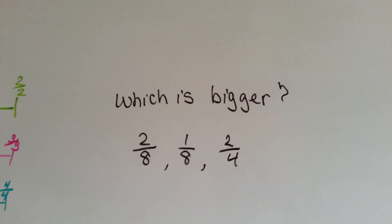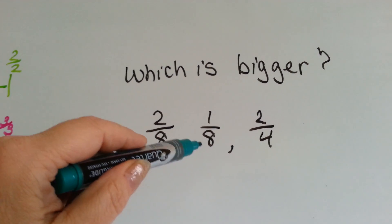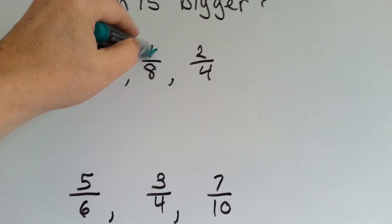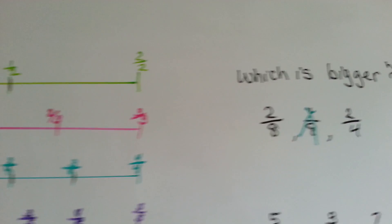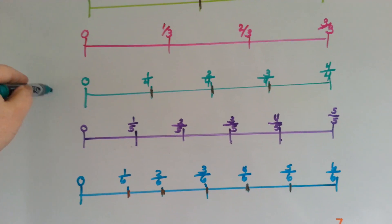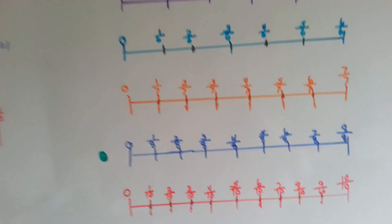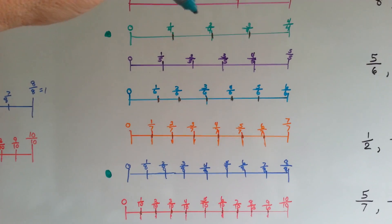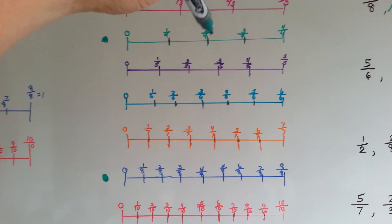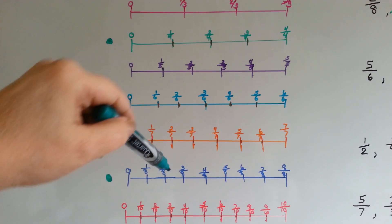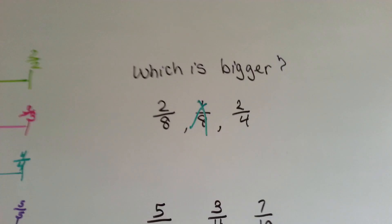Which is bigger: 2 eighths, 1 eighth, or 2 fourths? We already know that 2 eighths is bigger than 1 eighth because you've got two of them and only one there. So now which is bigger: 2 eighths or 2 fourths? Where's our fourths? It's right here. Where's our eighths? It's right here. The 2 fourths is bigger because it's farther towards the end. So 2 fourths is bigger.